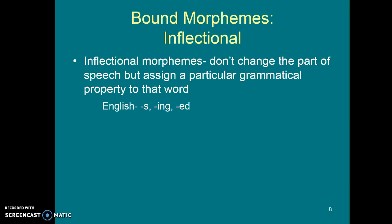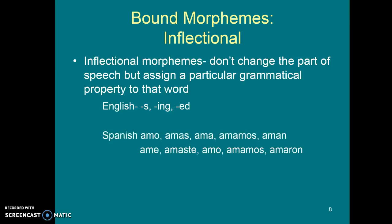Inflectional morphemes don't change the part of speech, but they assign some particular grammatical property to the word. In English, for instance, we have the -s ending to make nouns plural, or the -ing sound added to verbs — take 'run' and change it to 'running' — or the -ed sound that changes 'walk' into 'walked' to make the past tense. These are inflectional endings. If you ever took Spanish, you learned lots of inflectional endings: amo, amas, ama — or in the past tense, amé, amaste, amó. These endings that change the grammatical property of the word are inflectional morphemes.